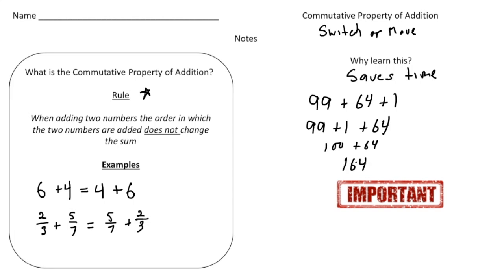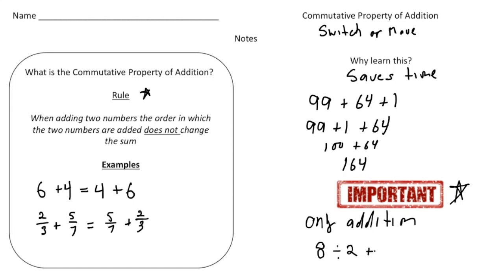The commutative property of addition gives you the power to move numbers around. This is really important — put a big star here. The commutative property of addition is for only addition. Here's an example of a problem where you could not move things around: 8 divided by 2 plus 4. We couldn't move the 4 or the 8 around. If the division sign were only a plus, then we certainly could move things around. But because we have a division sign in there, we cannot apply this property.